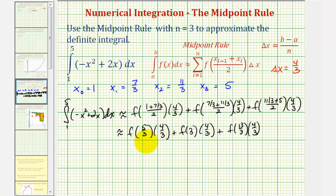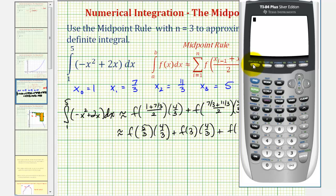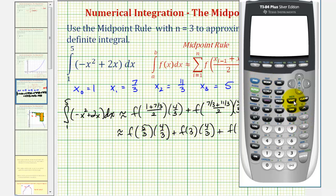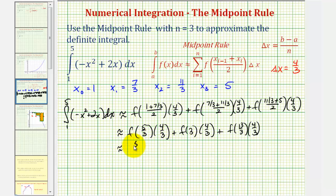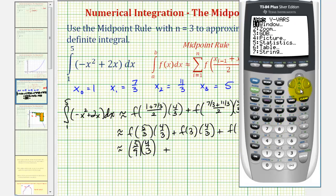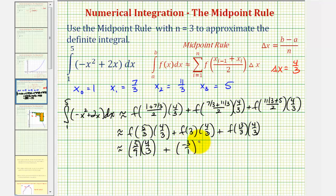Now let's find these function values using the calculator. We type the function negative x squared plus two x into y-one. To find f of five-thirds, we use vars, right arrow, enter, enter, and type y-one of five-thirds. Converting to a fraction gives us five-ninths. So the first product is five-ninths times four-thirds. Next, f of three: using vars, right arrow, enter, enter, and entering three gives us negative three. So the second product is negative three times four-thirds.